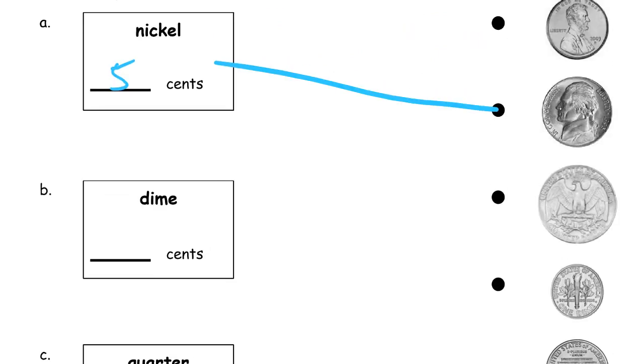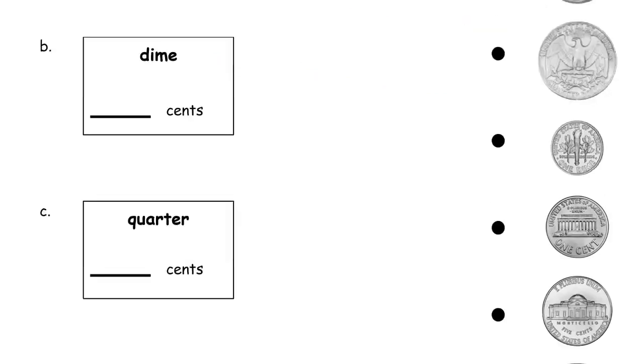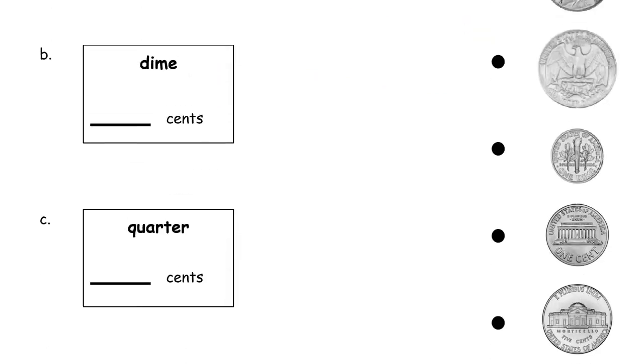They're all Thomas Jefferson, so they all have that same guy on it. The backs, I think, are all the same. This one right here — this is 5 cents right on it.